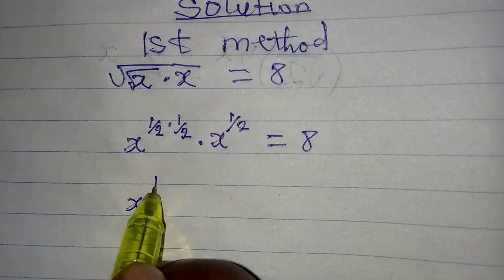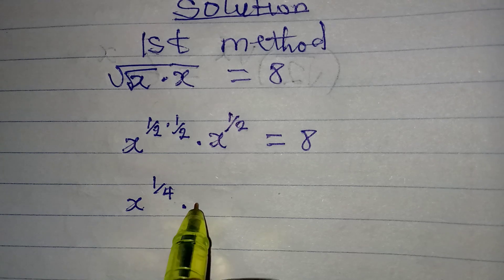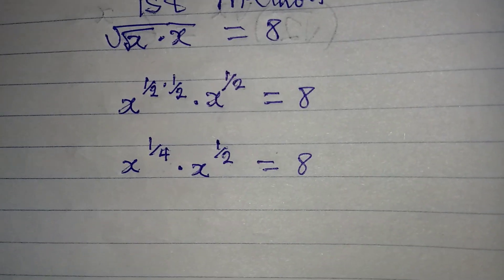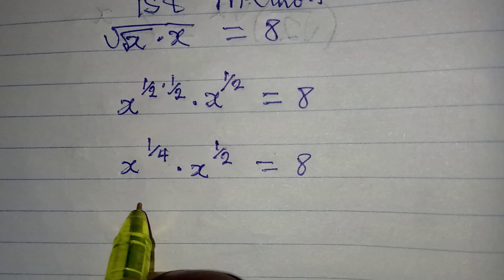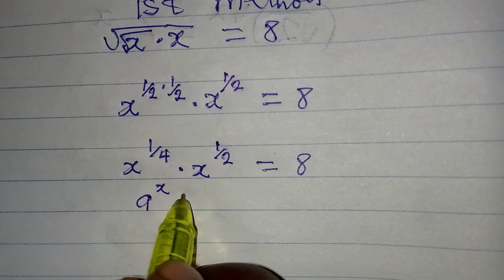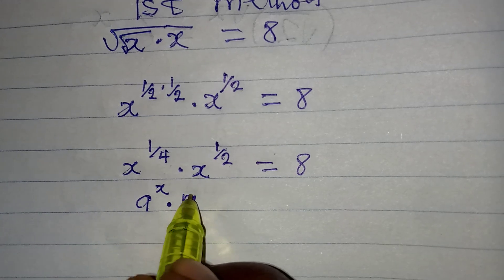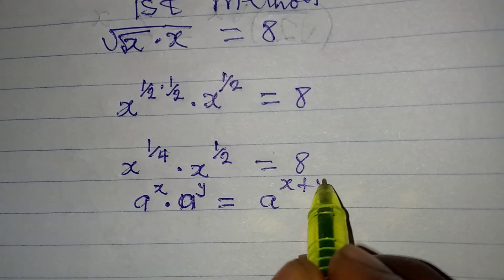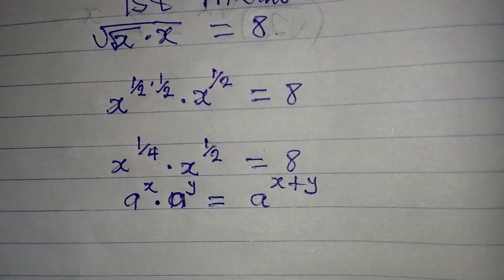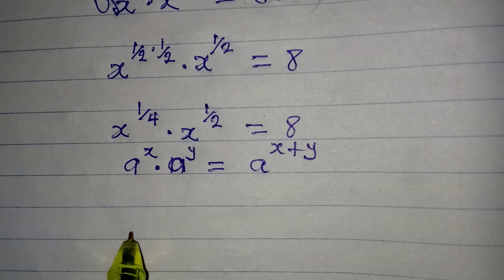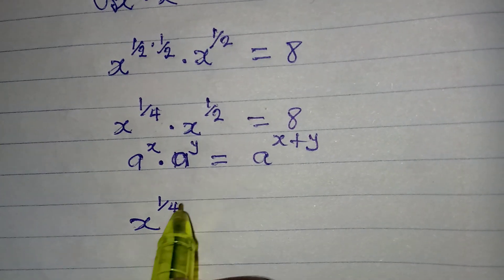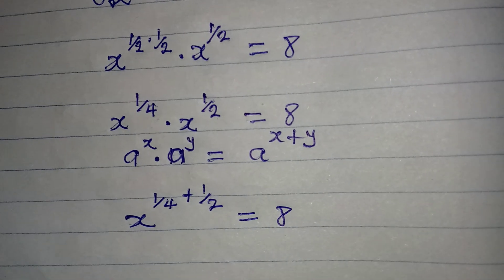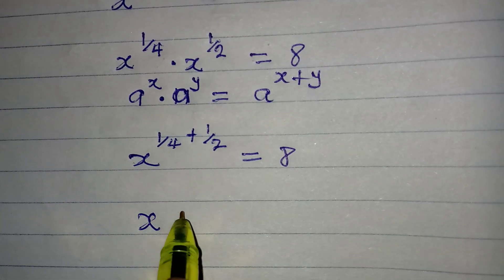Multiplying first, we have x to the power of one over four, multiplied by x to the power of one over two, which equals 8. Now let's apply the law of indices: a to the power of x multiplied by a to the power of y equals a to the power of x plus y, since when multiplying the same base you add the powers. Applying this, we have x to the power of one over four plus one over two, equal to 8.